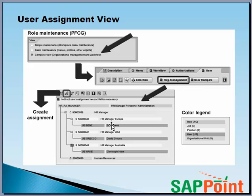Since the assignments in org management are time-dependent, you must take this time dependency into account when you assign the users. This occurs during the reconciliation process when the relationship period is copied from org management for the indirect user assignments. Depending on the status, you will see either a green color or a red color. Green means the users are up to date; red means the users are not up to date and the indirectly assigned users are not displayed in full on the tab page.